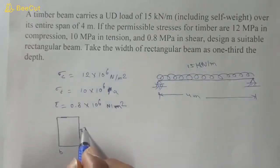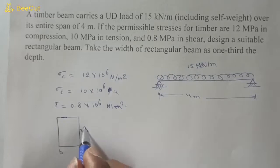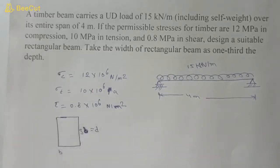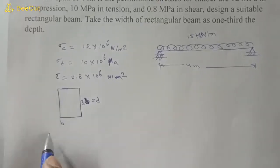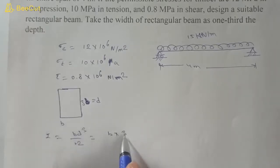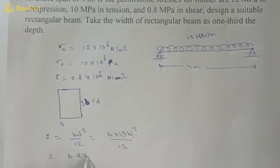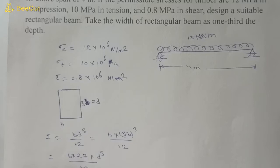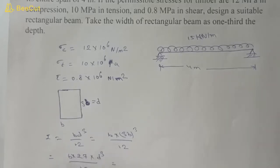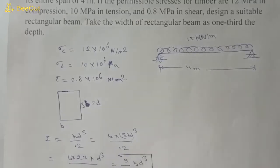For the cross-section of the beam, width b equals one third of depth d, so if depth is 3b then width is b. The moment of inertia I = b·d³/12 = b·(3b)³/12 = b·27b³/12 = 9b⁴/4. This is the moment of inertia of the rectangular cross-section.